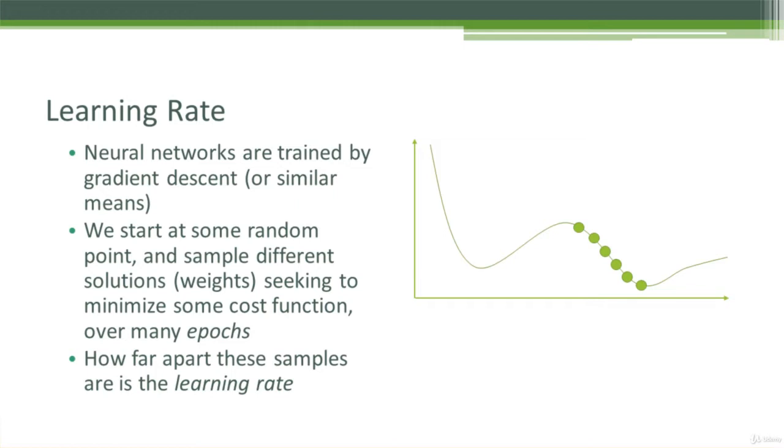So let's talk about learning rate first of all. What do we mean by learning rate? Well, you need to understand how these neural networks are trained. They're using a technique called gradient descent or something similar to gradient descent. There's various different flavors of it out there.